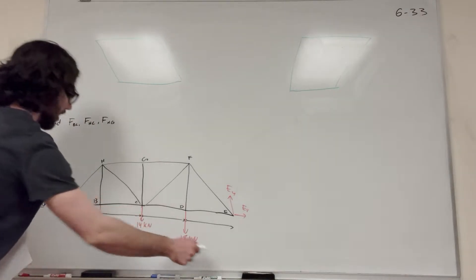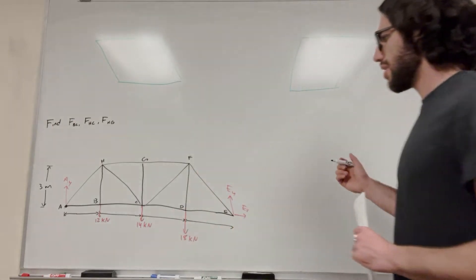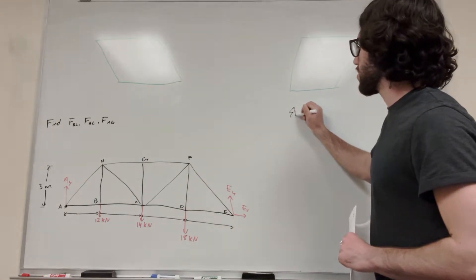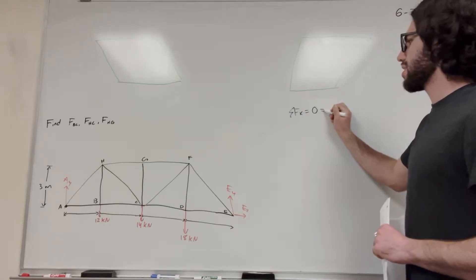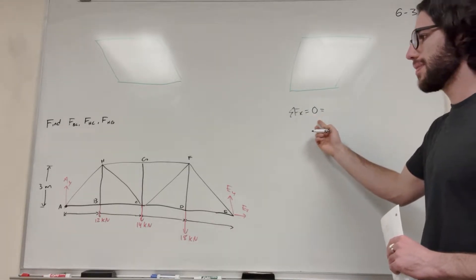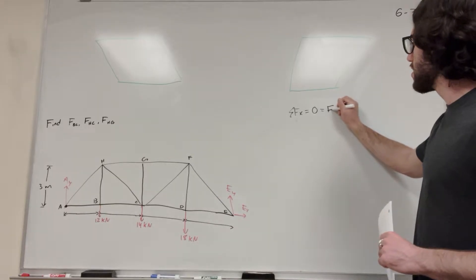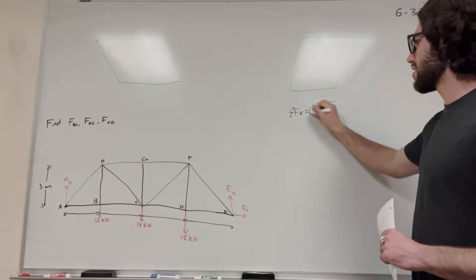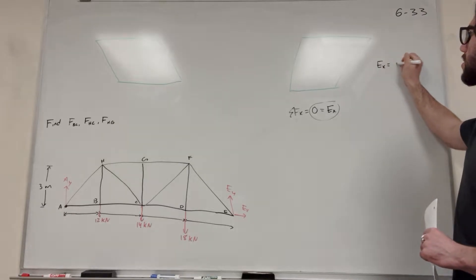So now we need to find A of Y, E of Y, and E of X. Let's start with the easiest one — the sum of the forces in the X direction. If we add up all the forces in the X direction, we know it has to equal zero. The only thing acting in the X direction is E of X, so E of X is equal to zero.